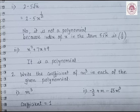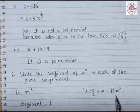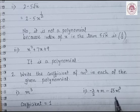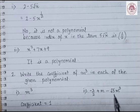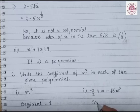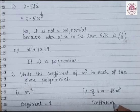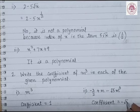Let's solve question number 2. The question is negative 3 by 2 plus m minus root 3 times m cube. We have to find the coefficient of m cube. The number multiplied to m cube is negative root 3, and therefore the coefficient is equal to negative root 3.